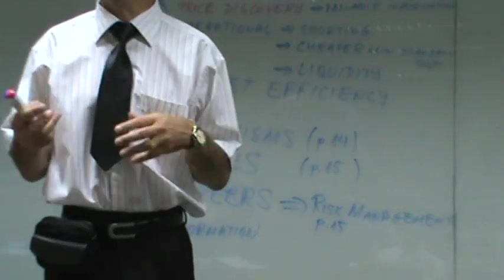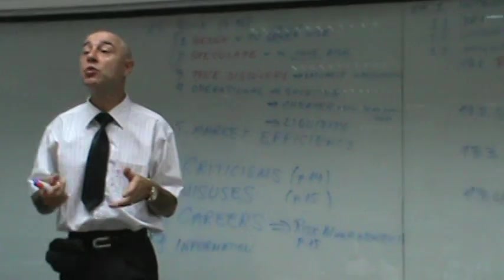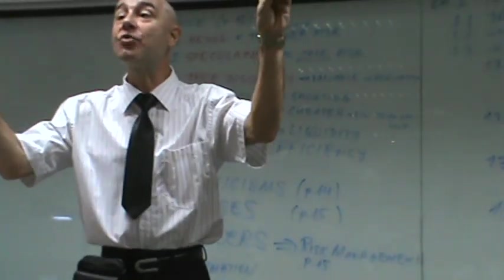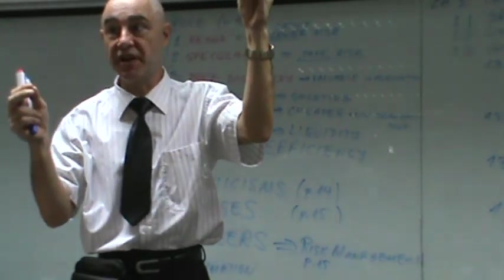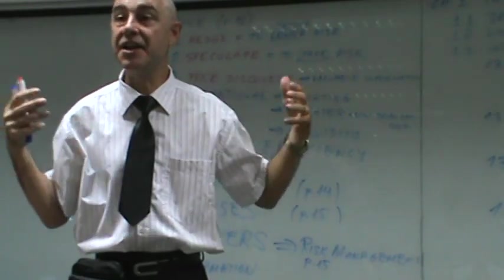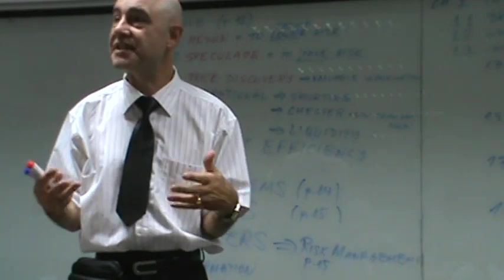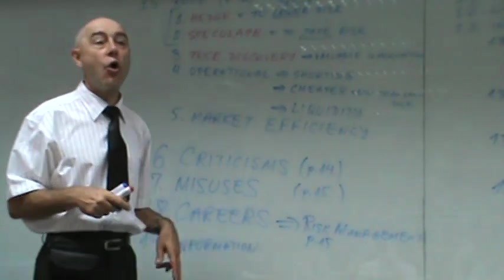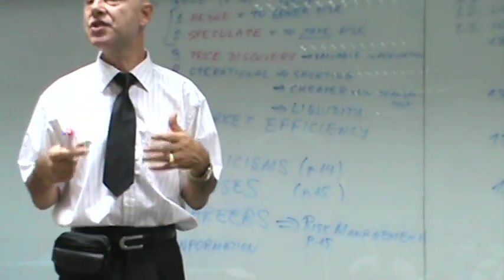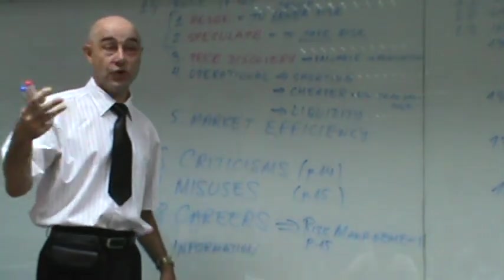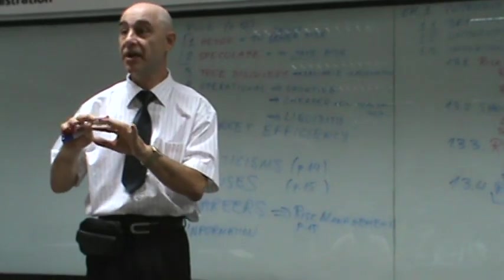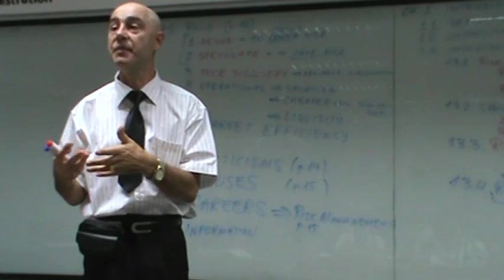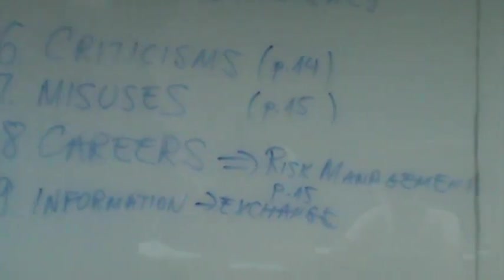Section 1.9 covers information. Information on over-the-counter derivatives is very hard to get — almost impossible — because OTC transactions are private transactions between a bank and a corporation, and neither will tell anyone what they're doing, at what prices, or volumes. For exchange-traded derivatives, the best source of information is the exchange itself. For example, for rice traded in Bangkok, you go to the respective exchange to find information.